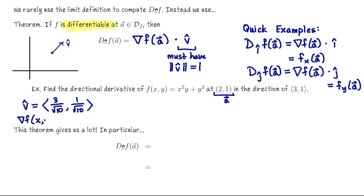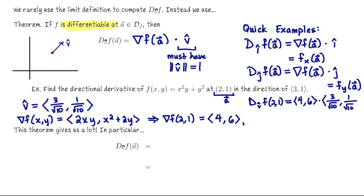Let me compute the gradient in general and then we'll plug the point in. So the gradient of f in general is (2xy, x² + 2y). That tells me that the gradient at the point (2,1) is going to be 2·2·1, so that's 4, and then 2² + 2 is 6. So the directional derivative of f at (2,1) in the direction of v is going to be (4,6) dot (3/√10, 1/√10). That's 12 + 6 divided by √10 which is 18/√10.